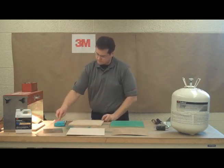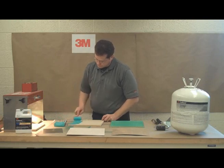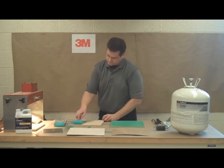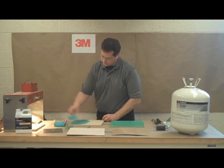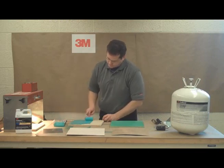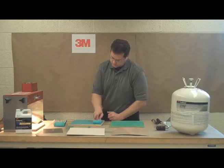Fastbond 30 is a low VOC contact adhesive that meets the country's most stringent air quality regulations, including California compliance and OTC regulations that are being adopted in the northeast part of the United States.